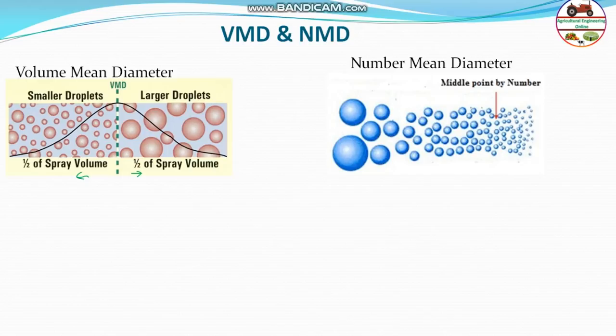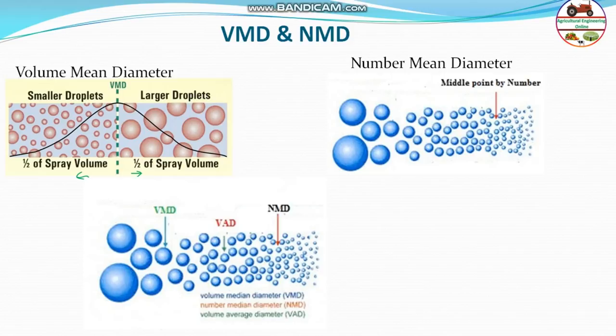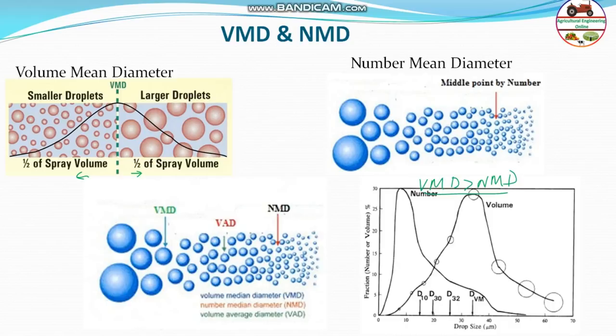VAD (Volume Average Diameter) falls between VMD and NMD. Always remember: VMD is greater than NMD. This relationship is frequently asked in competitive exams like GATE. NMD is the diameter where the number count is equal on both sides, while VMD represents the diameter where spray volumes are equal on both sides — larger droplets contribute more volume, pushing VMD higher.